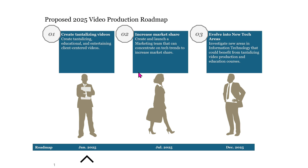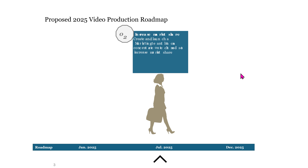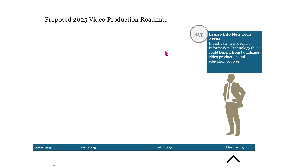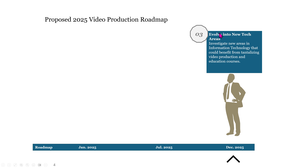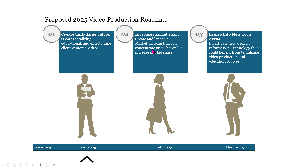In this third example for the morph functionality in PowerPoint we have a video production roadmap. If I click once it's on the main slide. If I click twice it goes to the first element of the roadmap, which is creating tantalizing videos. If I click again it goes to increasing market share, the second element. If I click once more it goes to the third element, evolving to new technologies. If I click once more it goes back to the main slide.